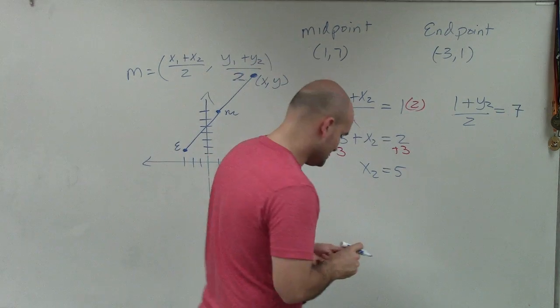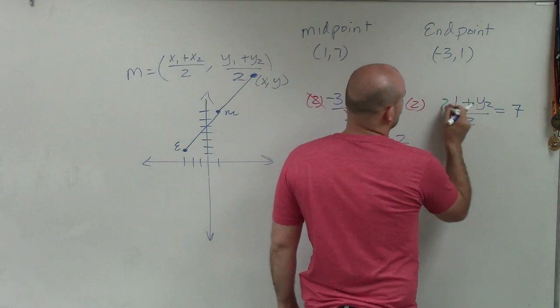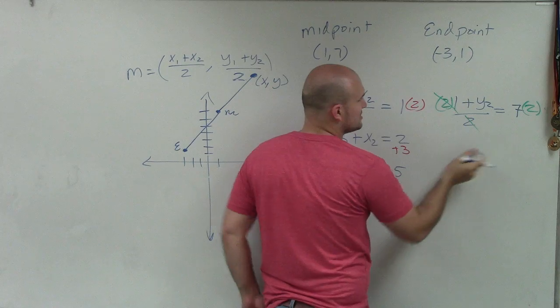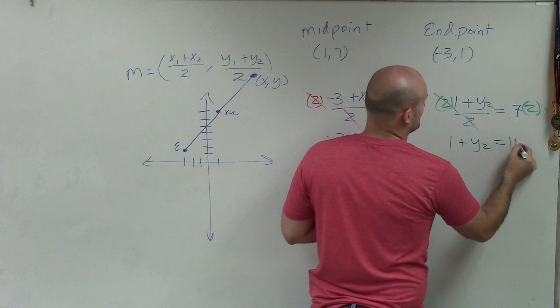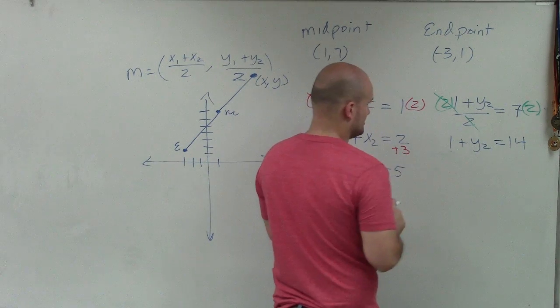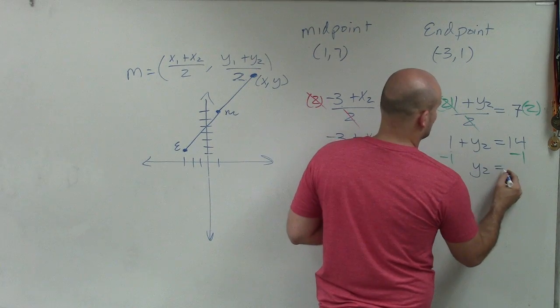Over here, I need to apply my inverse operations. So I'll use a different color just so it doesn't get confusing. Again, you need to multiply by 2 on both sides. I'll multiply my 2 and divide my 2, divide into 1. And I'm left with 1 plus y2 equals 7 times 2 is 14. Subtract 1, subtract 1. y2 equals 13.